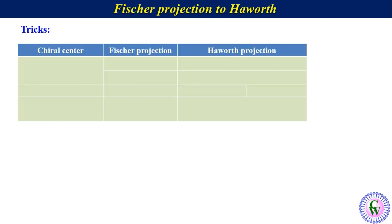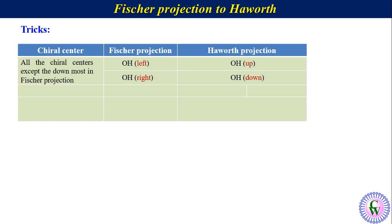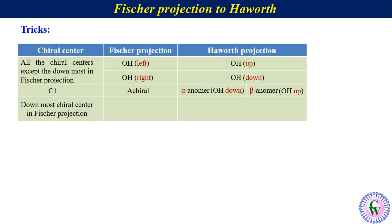These can be summarized in the following table. For all the chiral centers except the downmost in Fischer projection formula, left side OH in Fischer will be up in Haworth, while right side OH in Fischer will be down in Haworth. For C1, which is achiral in Fischer but chiral in Haworth and exists as alpha and beta anomers: in the alpha anomer OH is down, while in the beta anomer it is up. For the downmost chiral center in Fischer, if the OH is on the right side then in Haworth the CH₂OH will be up, and if OH is on the left side in Fischer then CH₂OH in Haworth will be down.